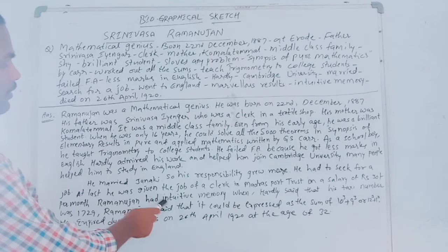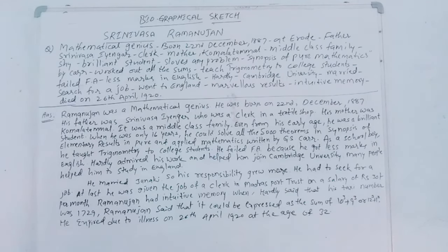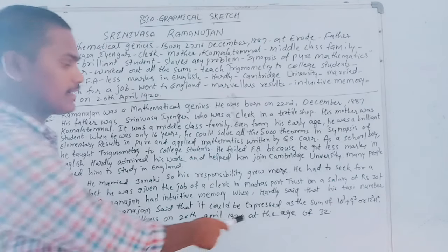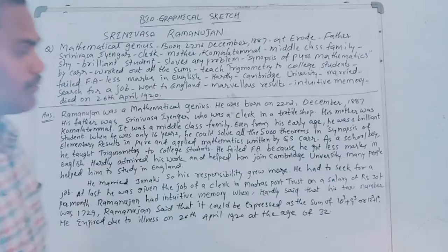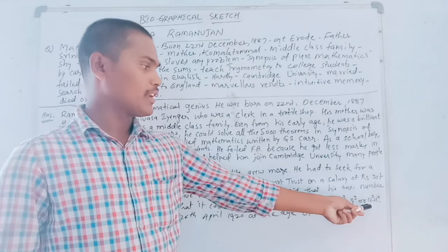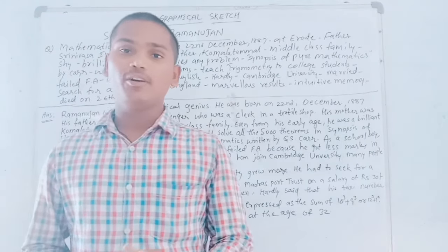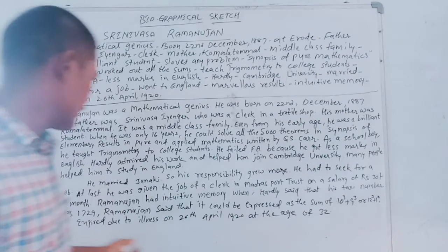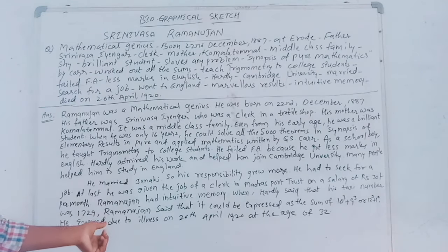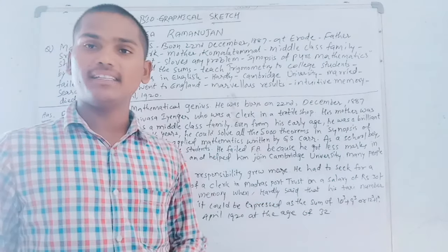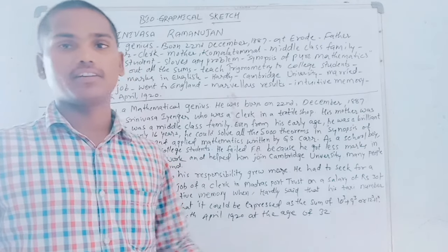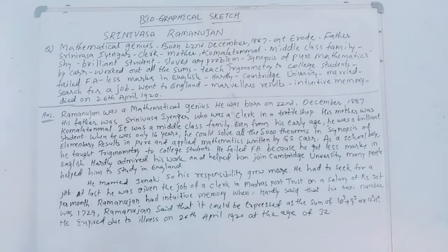Ramanujan had intuitive memory. When someone said that their taxi number was 1729, Ramanujan immediately said that 1729 could be expressed as the sum of 10 cubed plus 9 cubed, or 12 cubed plus 1 cubed — he solved that instantly. He expired due to illness on 26th April 1920 at the age of just 32.